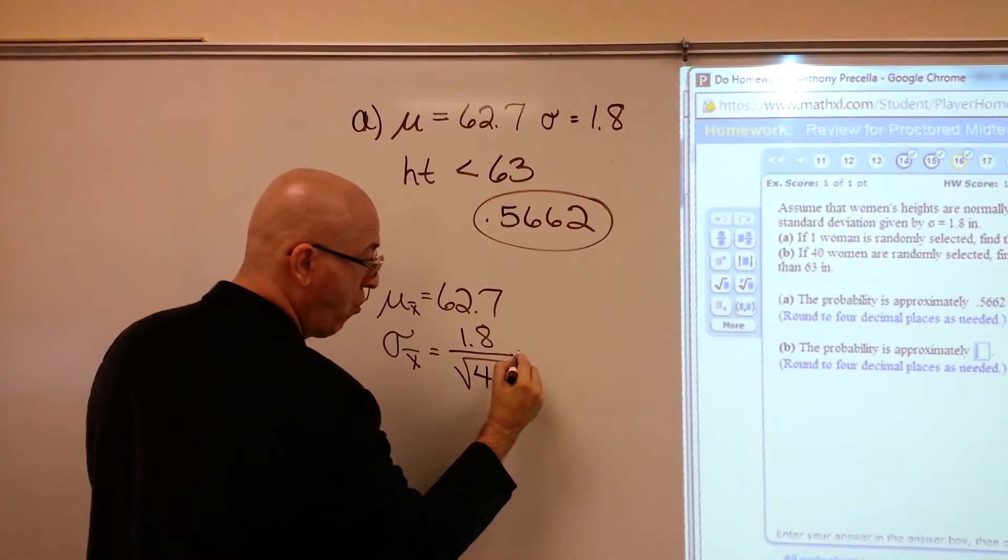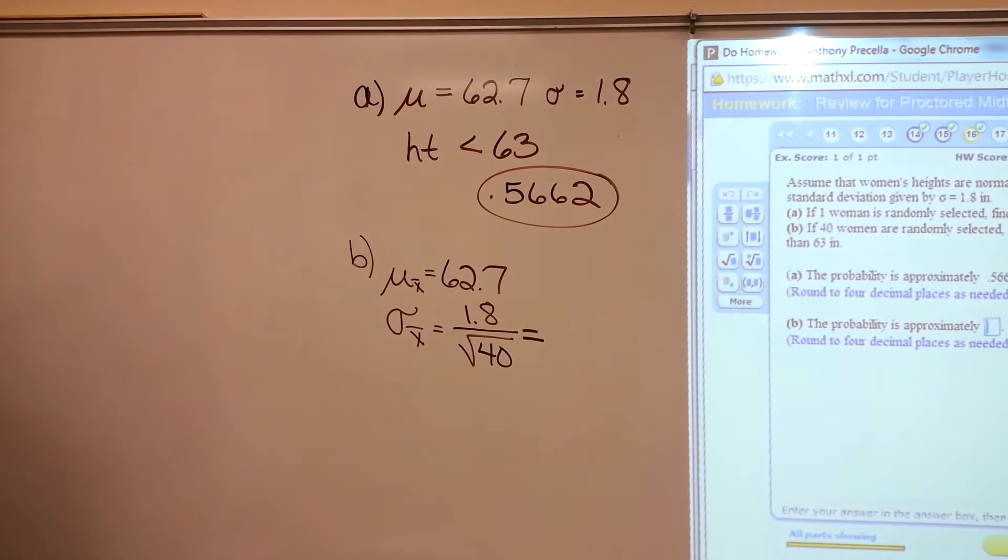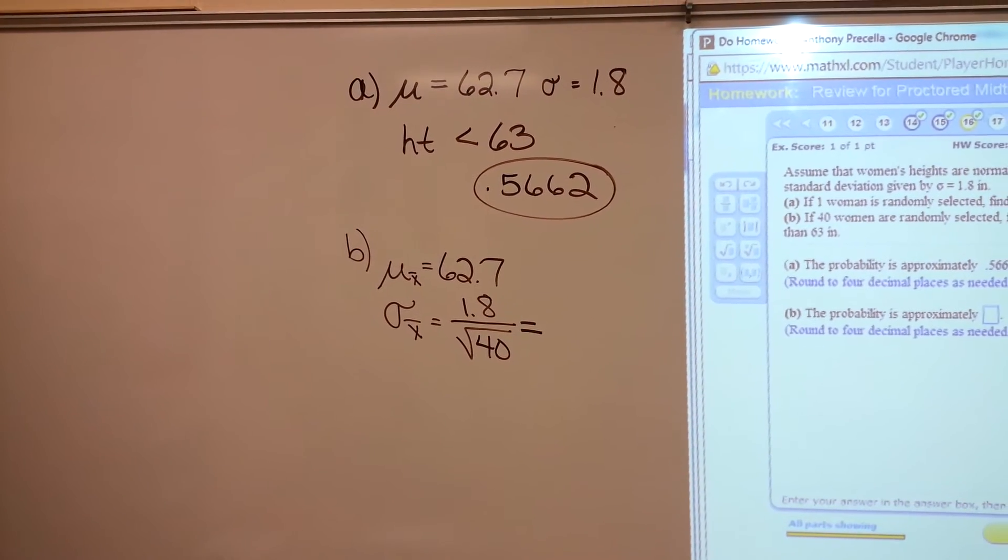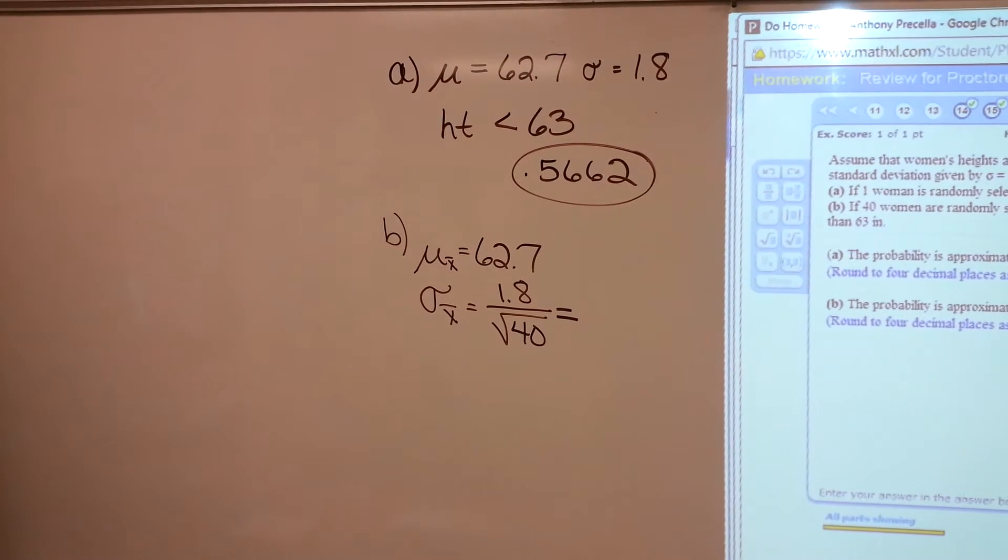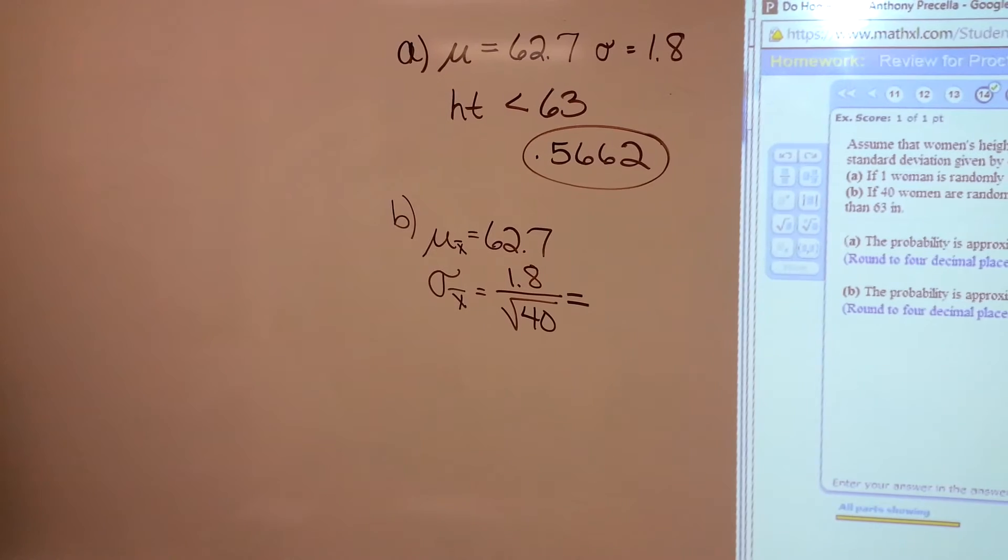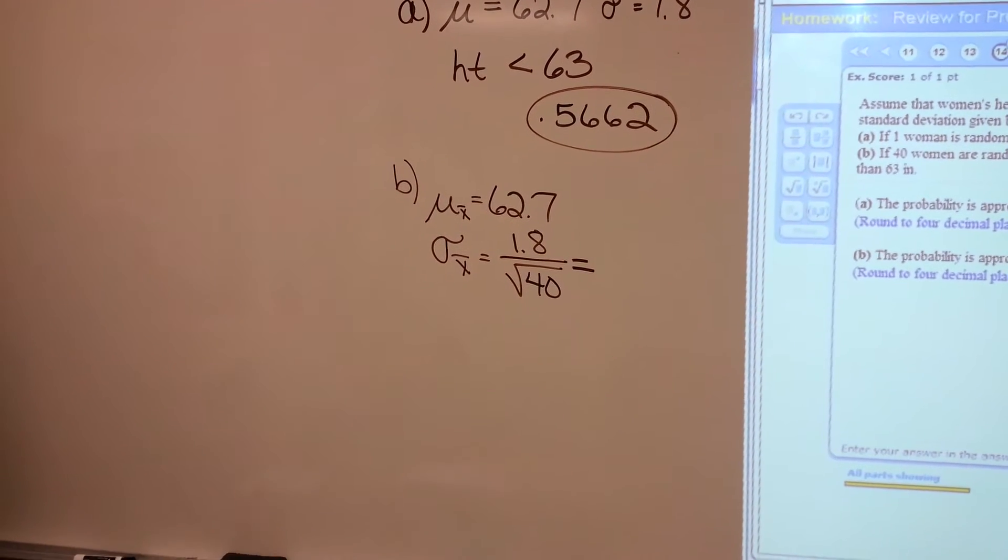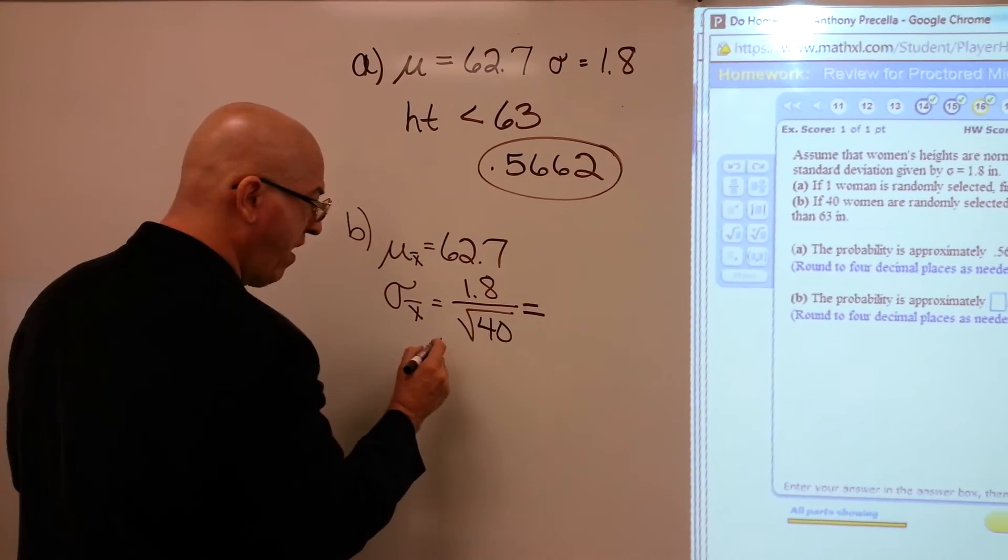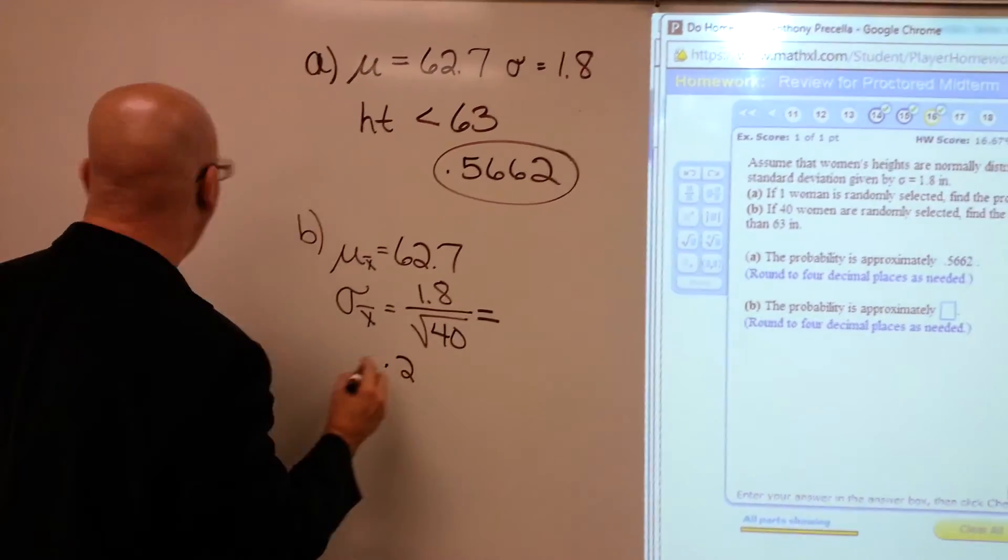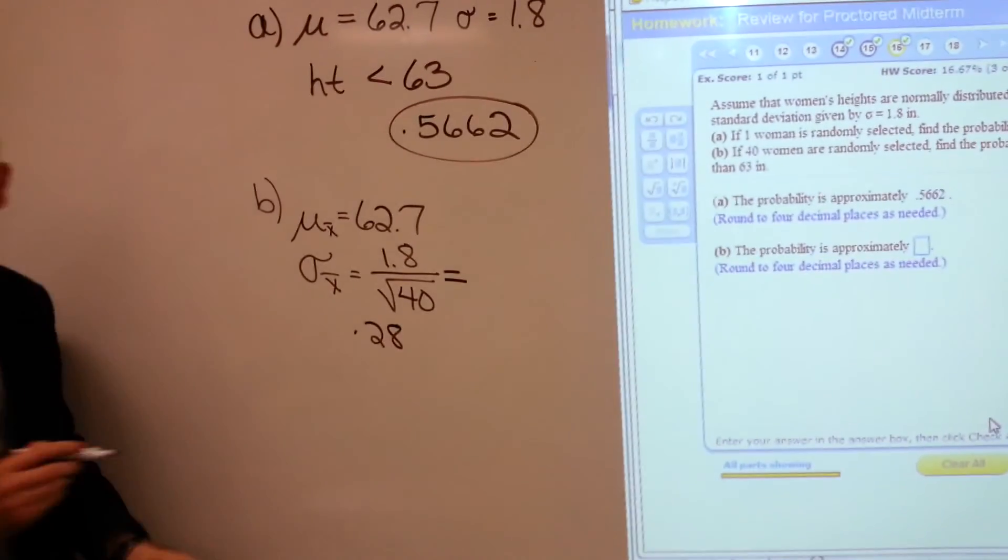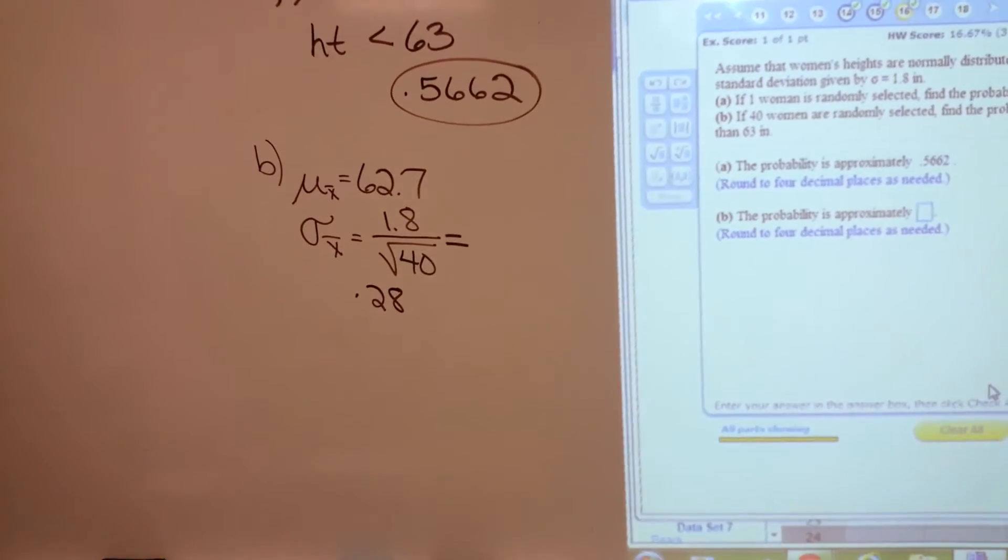So the square root of 40. I need to pull up my calculator. And let's see what we have: 1.8 divided by the square root of 40. And this I'm not going to round: 0.28460.